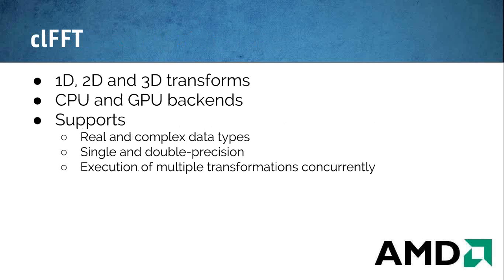Let me go quickly over these libraries in more detail. CLFFT allows you to do fast Fourier transforms — 1D, 2D, or 3D. It has both a CPU and GPU backend, meaning you can run on either architecture. It supports a large number of data types — real and complex, single and double precision — and allows you to do multiple transforms concurrently. This is a library maintained by AMD.